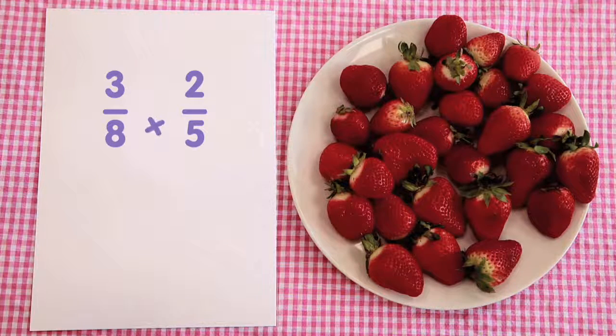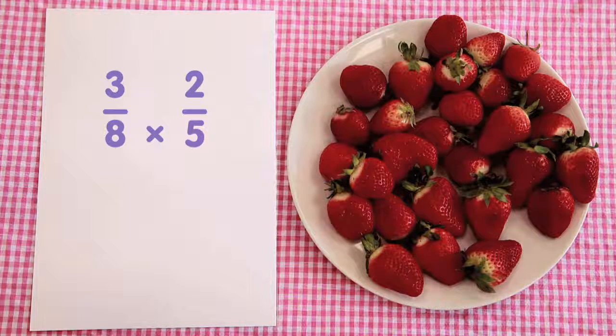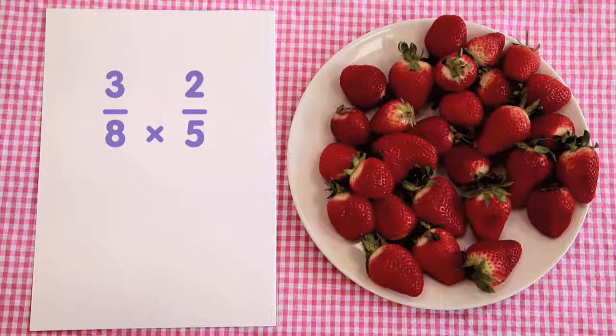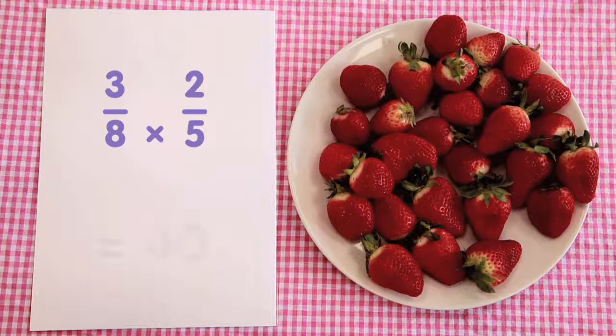Firstly, we multiply the denominators to get what we call a common denominator. So eight multiplied by five equals 40.